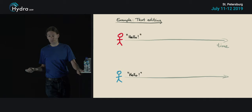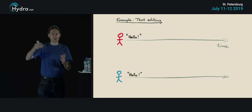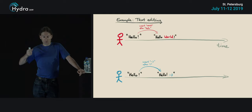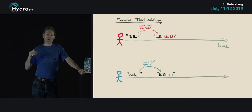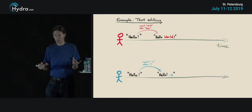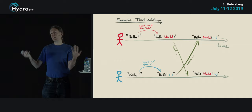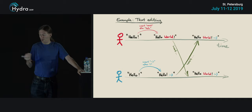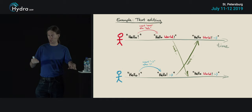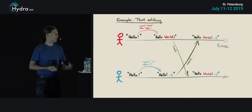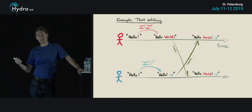Let's take a text editor as an example. Two users both start with a document that says 'hello'. The red user inserts the word 'world' before the exclamation mark, and concurrently the blue user inserts a smiley face after the exclamation mark. These two edits happen concurrently — possibly offline, without knowledge of each other. Then at some later point these users exchange their edits, and we want those changes to be merged together into a consistent document: keeping 'world' before the exclamation mark and the smiley after it. We want everyone to eventually end up in a consistent state — known generally in distributed systems as eventual consistency.